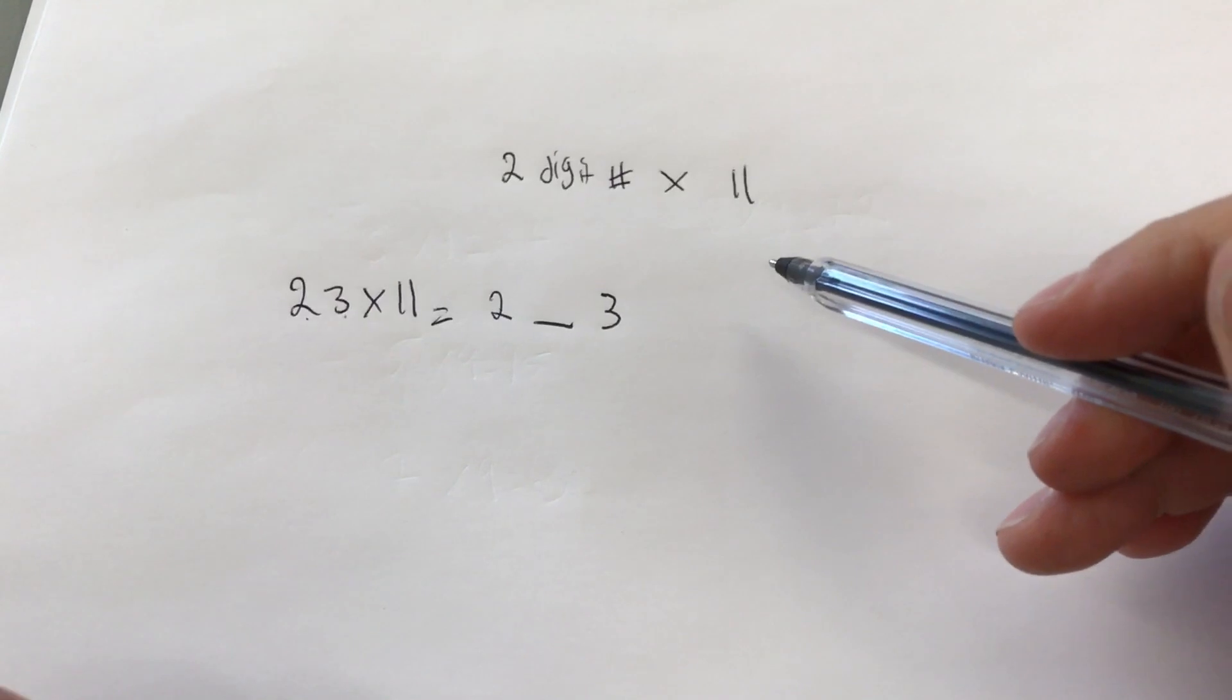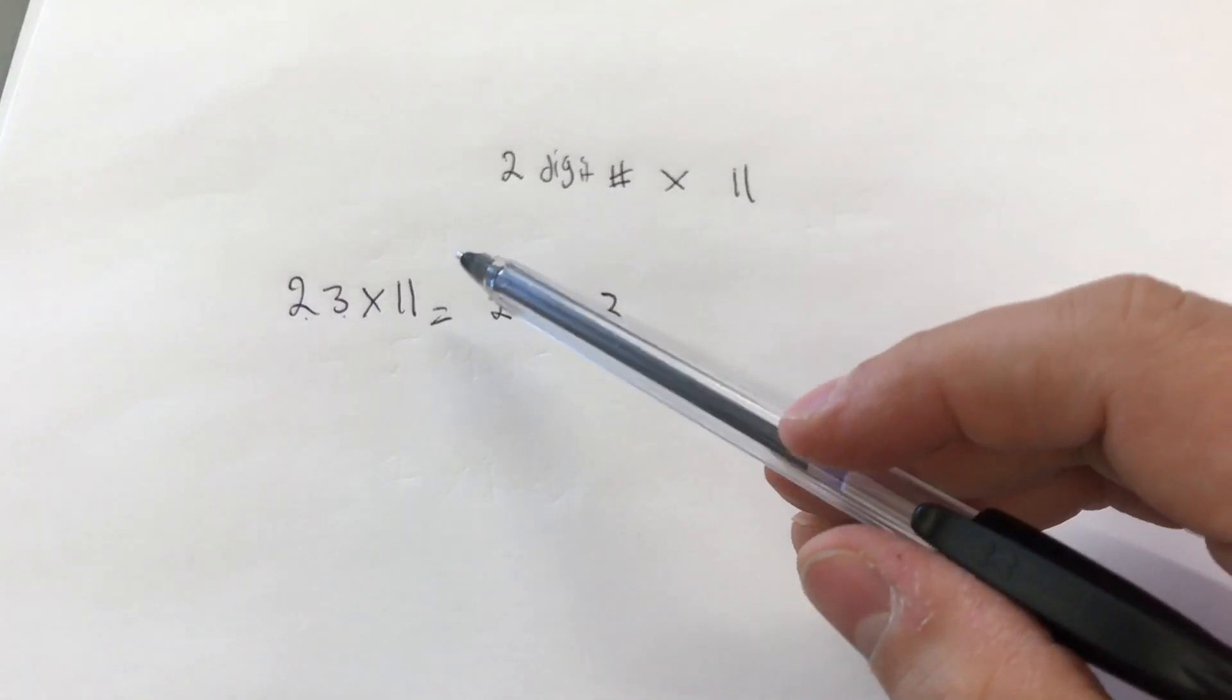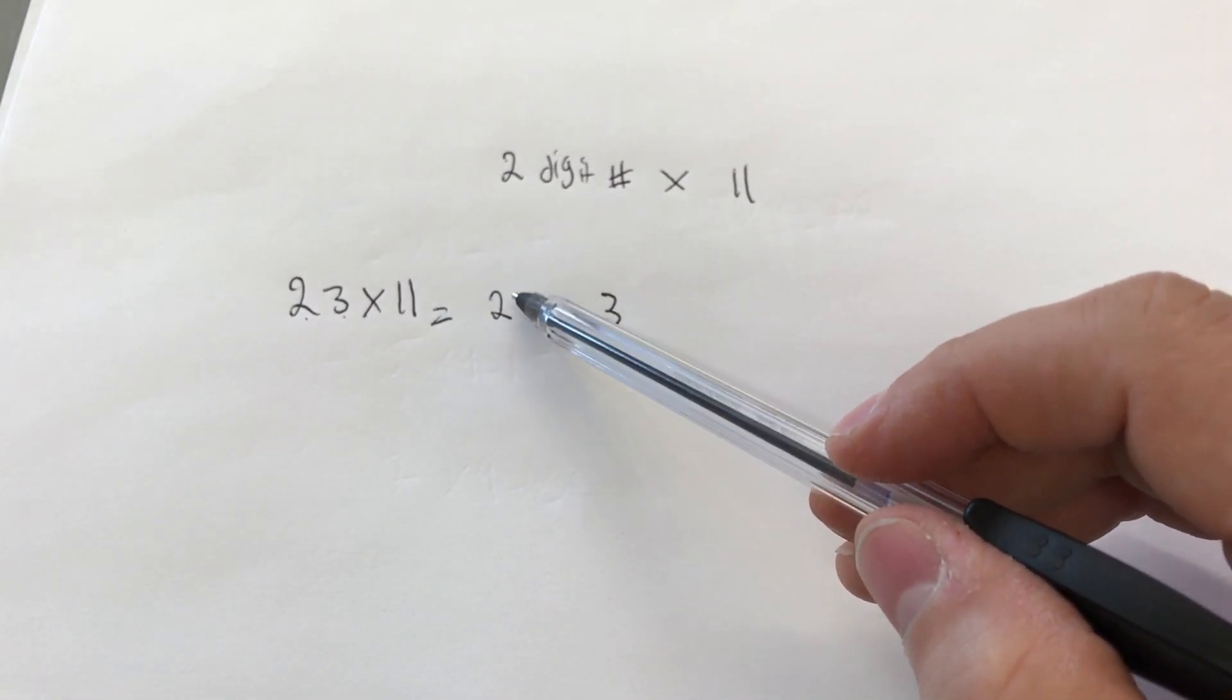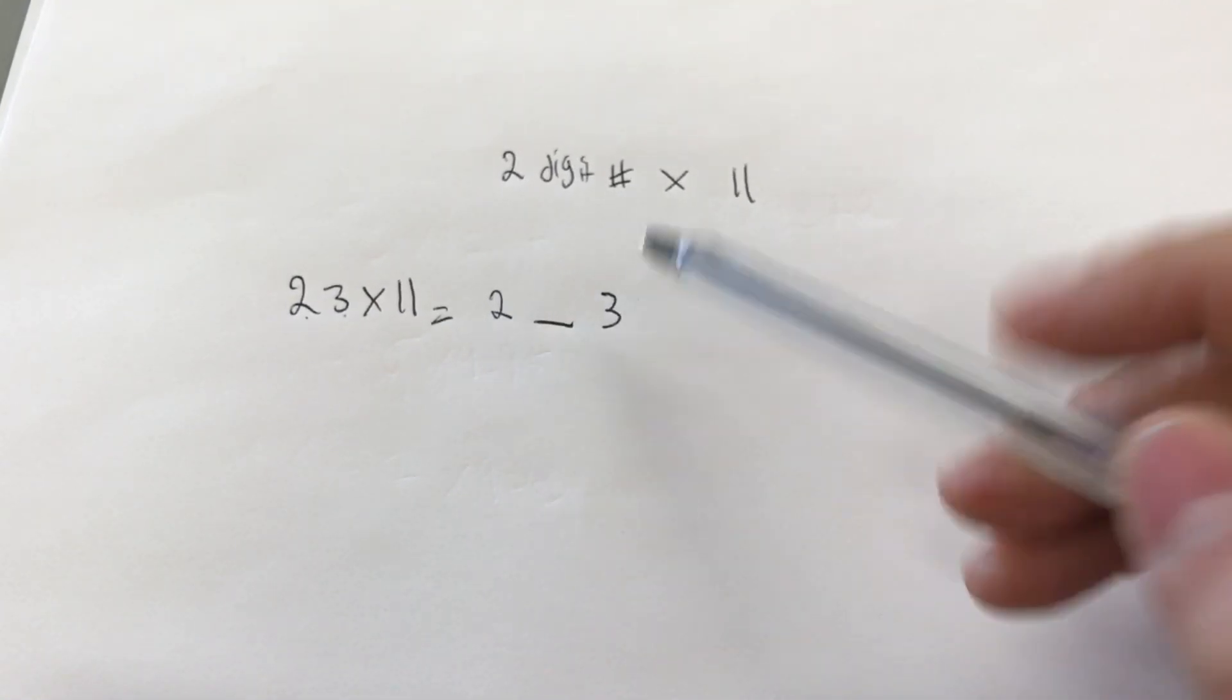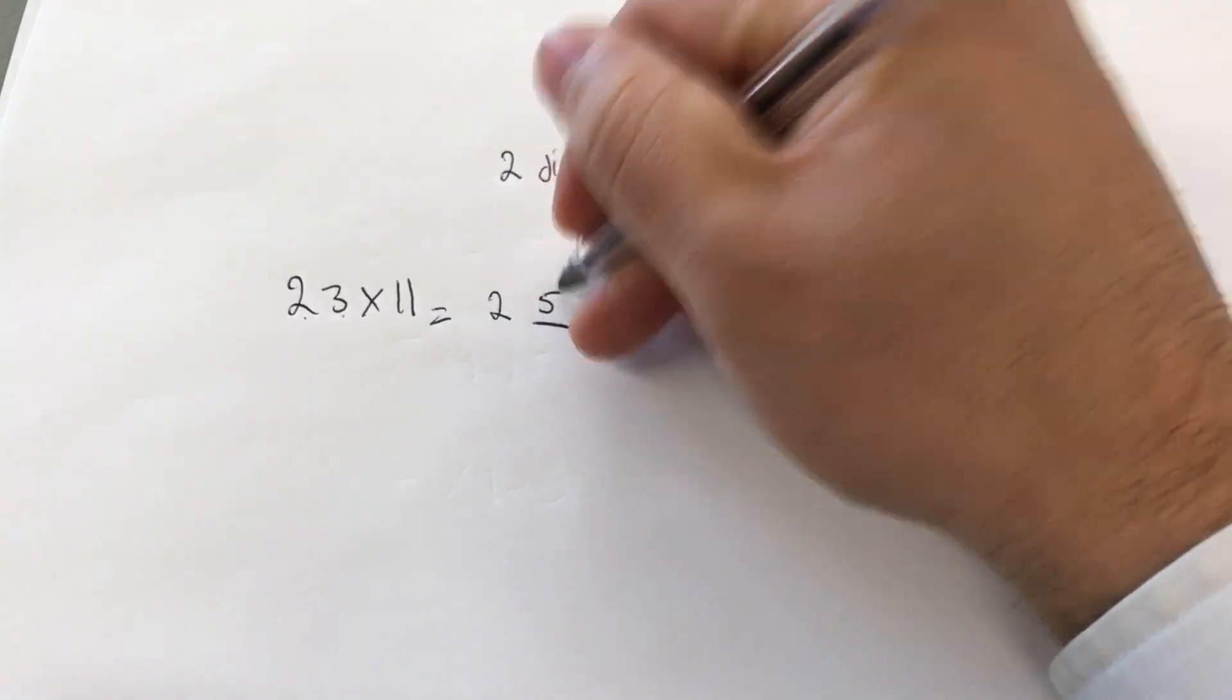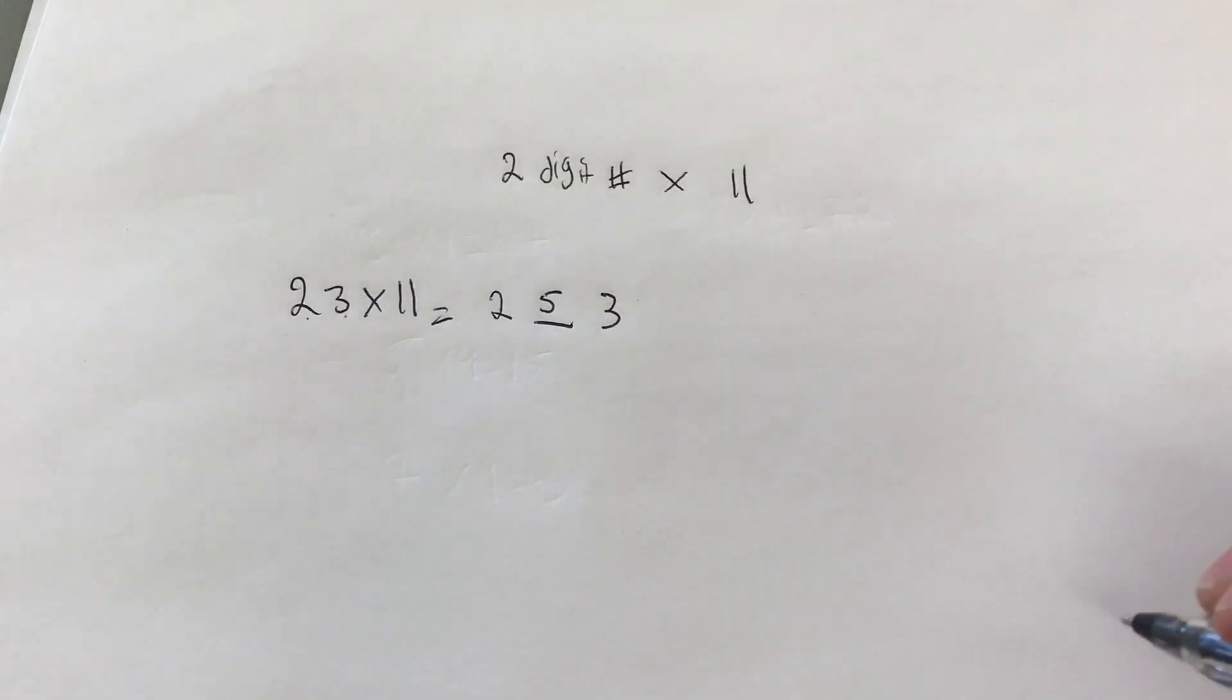Then what you're going to do is you're actually going to add the numbers. So you're going to add the numbers and put the answer in the space. So 2 plus 3 is 5. So I'm going to put the answer of 5 right over here. 253. That is the answer. It's literally that simple.